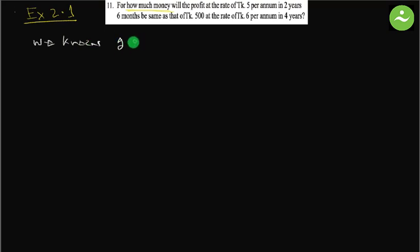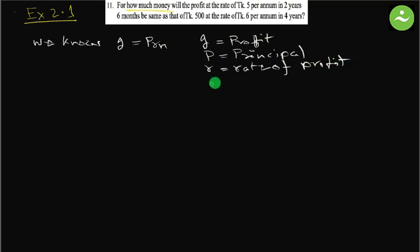We know i equals to prn. Here i is profit, p is principle, r is rate of profit, and n is number of years or time.